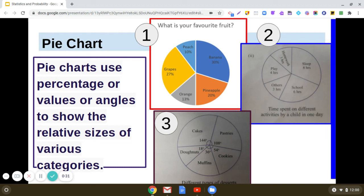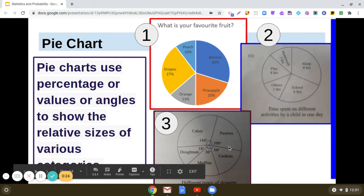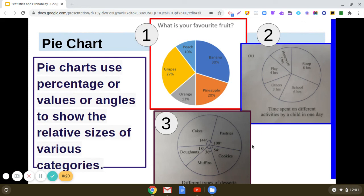Now see the third one. It represents different types of dessert, and here the information is represented in degrees. Degrees are taken as a part of the circle. The central angle is 360 degrees. 144 degrees is for cakes, 108 degrees for pastries, and likewise other types of dessert are represented.